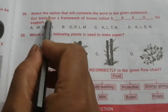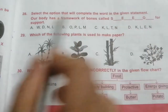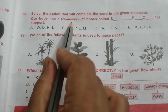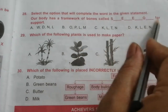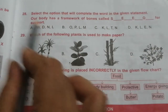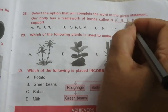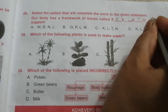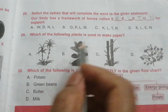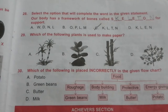Question 28: Select the option that will complete the word in the given statement — 'Our body has a framework of bones called dash for support.' The answer is skeleton: S-K-E-L-E-T-O-N. The missing letters are K-L-T-N. The answer is C.